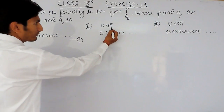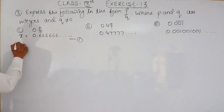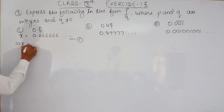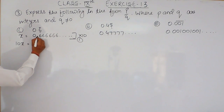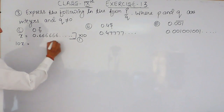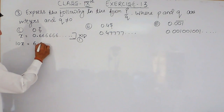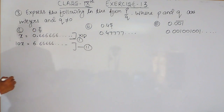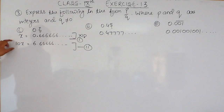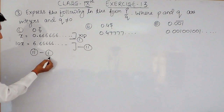For 0.6 bar, we multiply the equation by 10. So 10x equals 6.6666... and so on. This is our second equation. Now we subtract the first equation from the second equation.